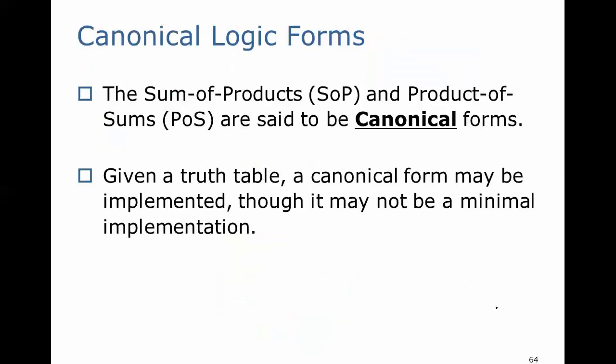Lastly, I just want to point out that the sum of products, SOP, and the product of sums, POS, are said to be canonical forms. So given a truth table, a canonical form may be implemented, though it may not be a minimum implementation. We will be looking at minimization next.